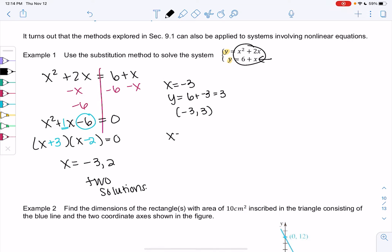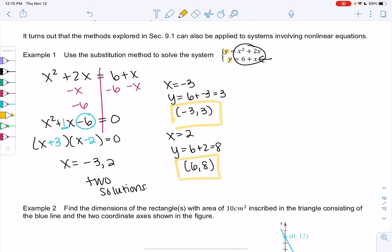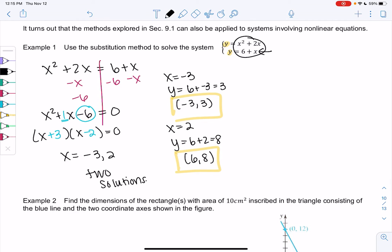If x equals 2, then y equals 6 plus 2 or 8. So 2, 8 is another solution. So those are my two solutions. Let's check out the graph just to be a little bit more confident that this makes sense.